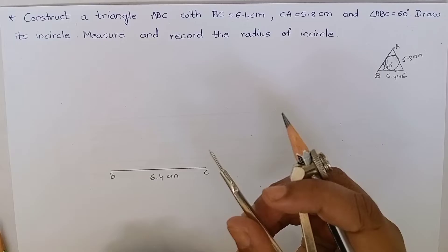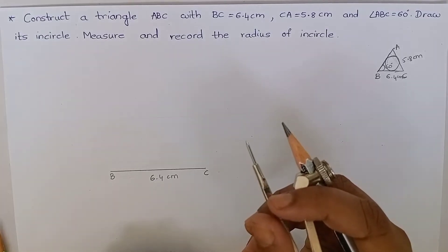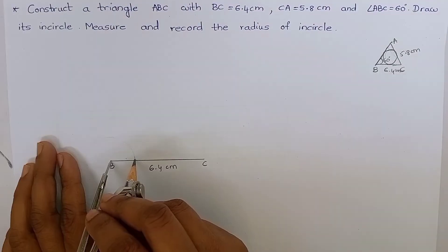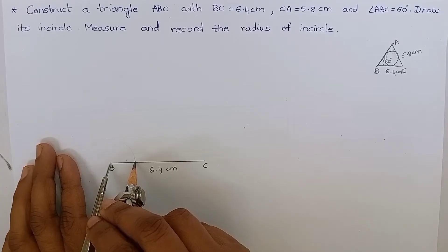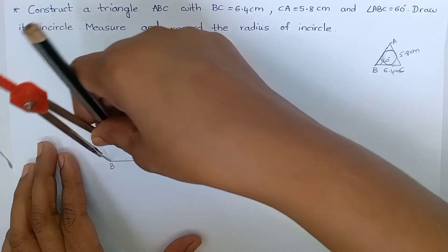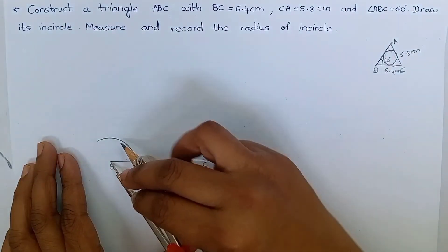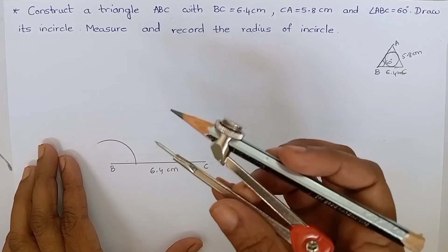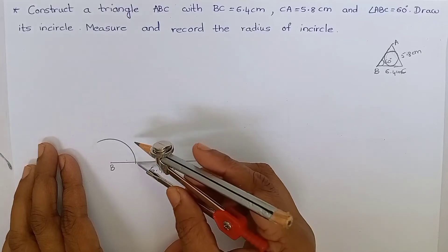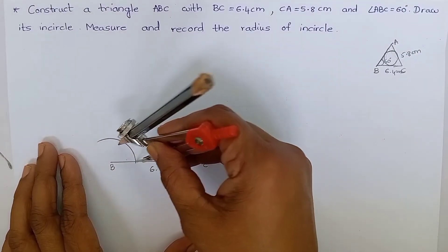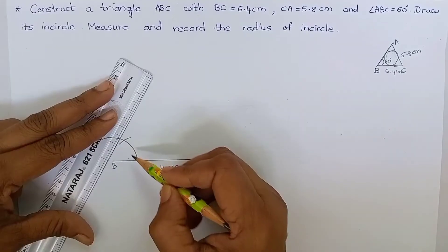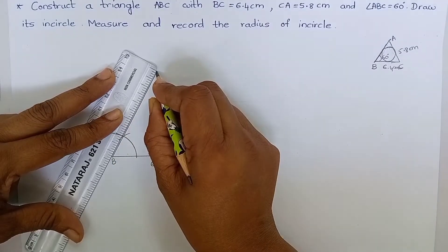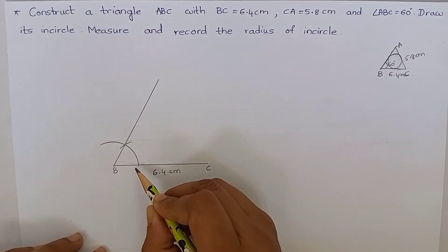Adjust your compass to any measurement of your wish. Keep this compass at point B and draw an arc. Without changing the measurement of the compass, keep your compass at this point and cut an arc. Join these two points — it measures 60 degrees.